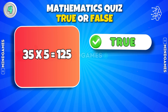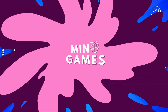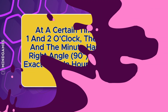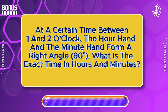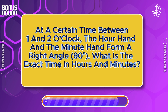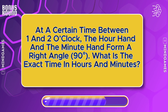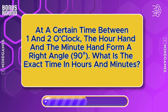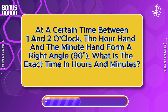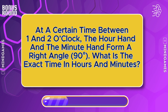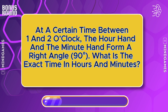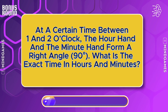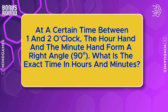At a certain time between 1 and 2 o'clock, the hour hand and the minute hand form a right angle — 90 degrees. What is the exact time in hours and minutes? Do let us know your answer in the comments.